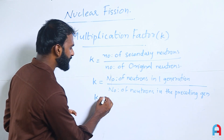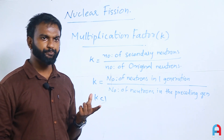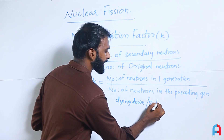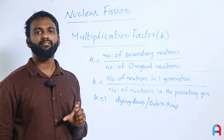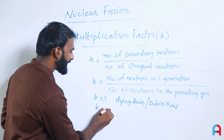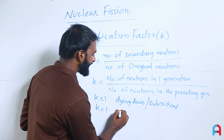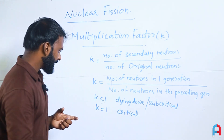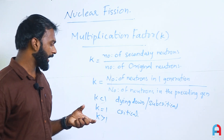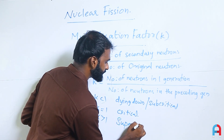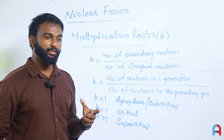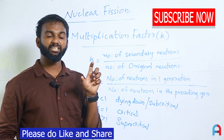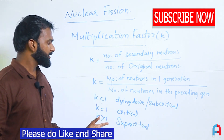If k is less than 1, the reaction is dying down — this is called subcritical. If k is equal to 1, the reaction is critical and stable. If k is greater than 1, the reaction is supercritical, meaning the reaction rate increases rapidly. This is the multiplication factor and its conditions.